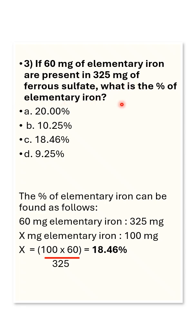We need to find out the percentage, or in other words, the amount of elemental iron present in 100 mg.